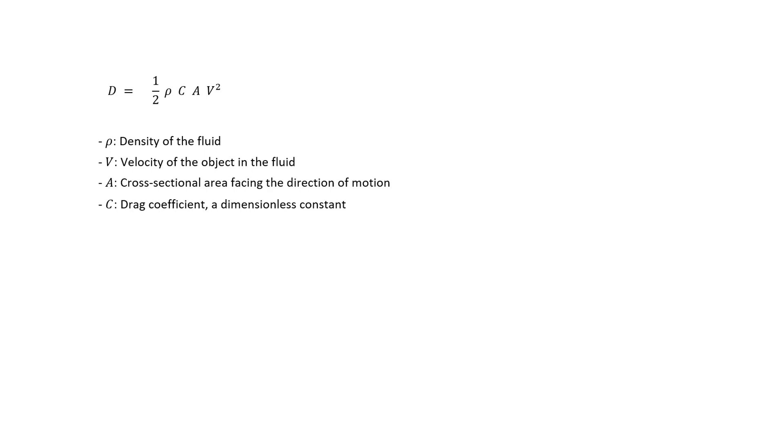So to start with, we can say that since the velocity of the ball is pointing in the downward direction, the drag force is directed upwards. We can also say that since its velocity is increasing due to gravity, the drag force would also be increasing. So you see, this upward drag force is basically opposing the downward gravitational force on the body.